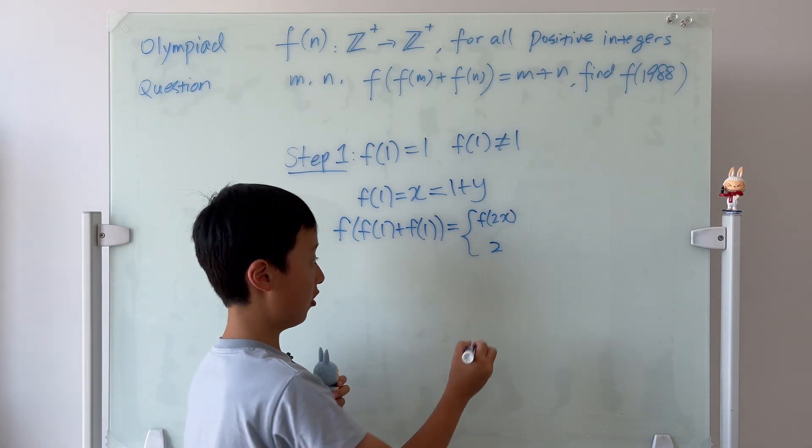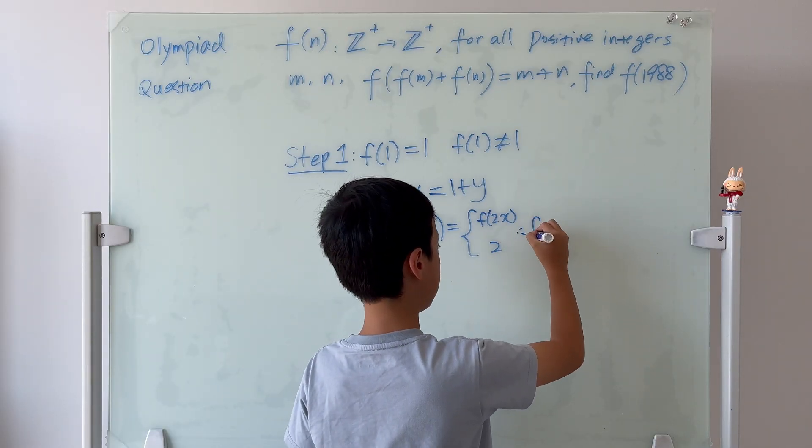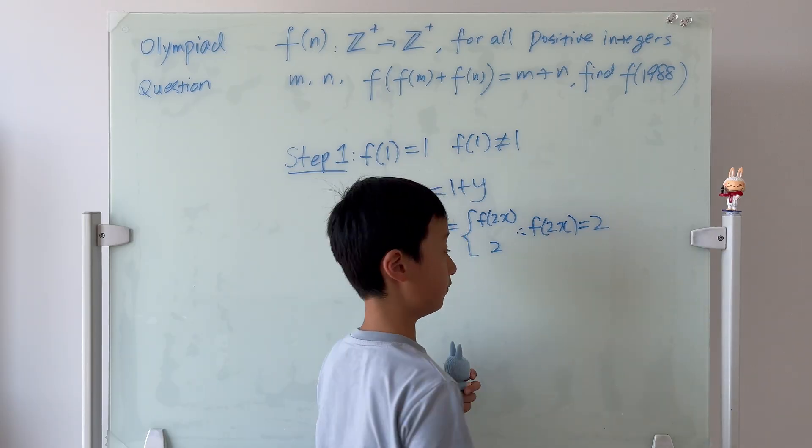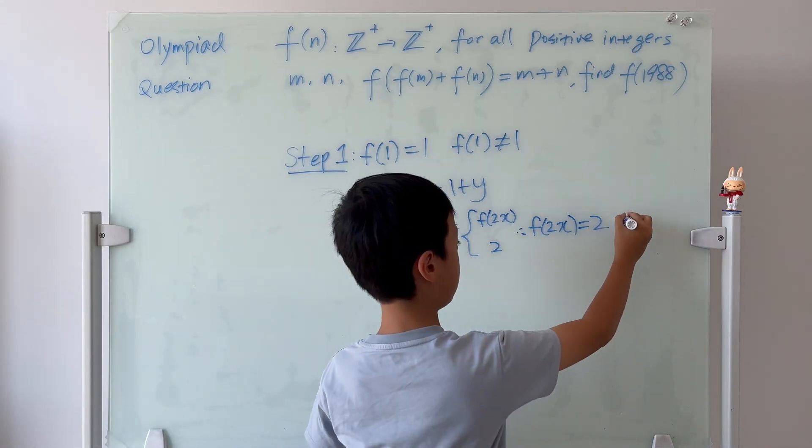So, therefore, we know that f of 2x is equal to 2. This is equation 1.